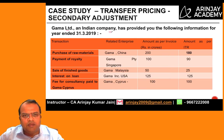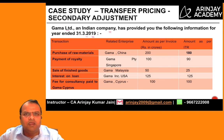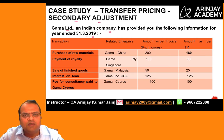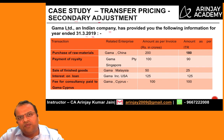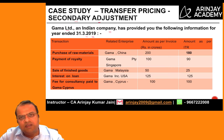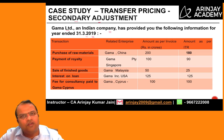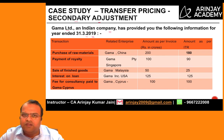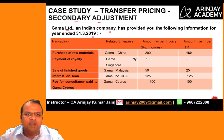Gamma Limited, an Indian company, has provided the following information for 31/3/2019. This is a case on secondary adjustment. Briefly, if the arm's length price offered by the assessee is different from the price the tax office agrees upon, the difference must be recovered within the prescribed time. If not, interest is charged on that amount.